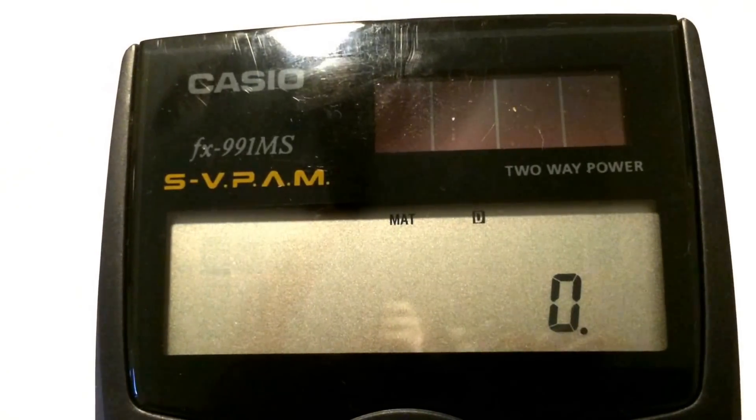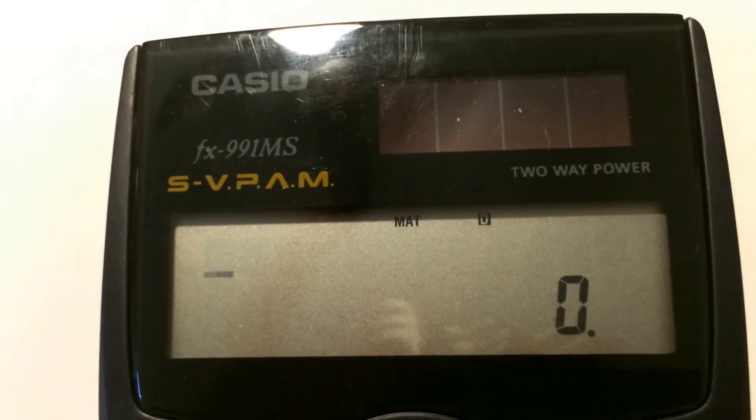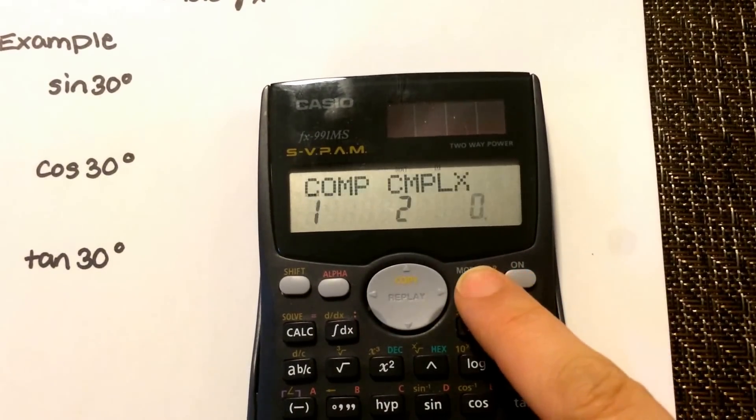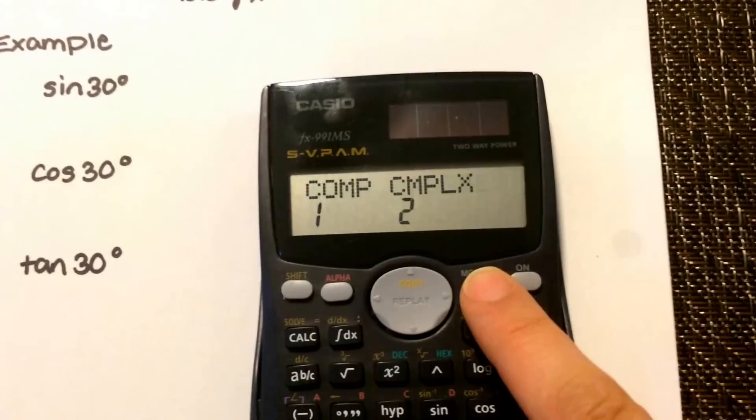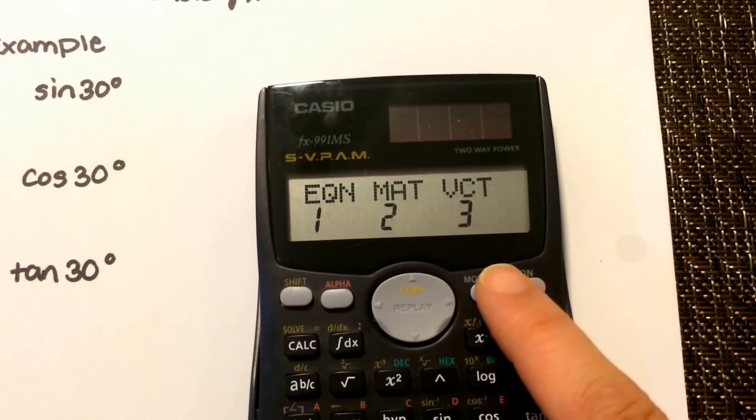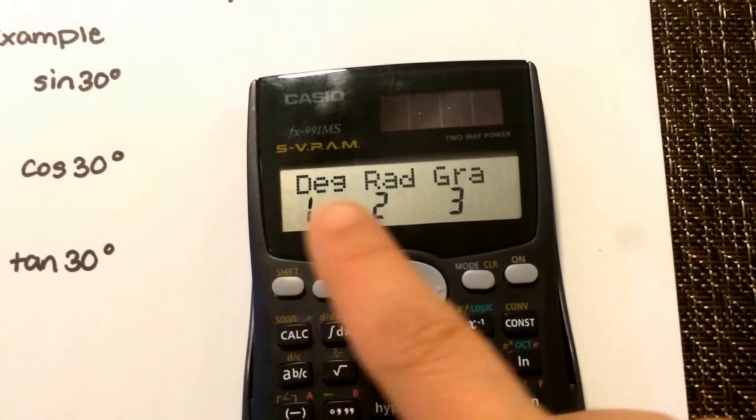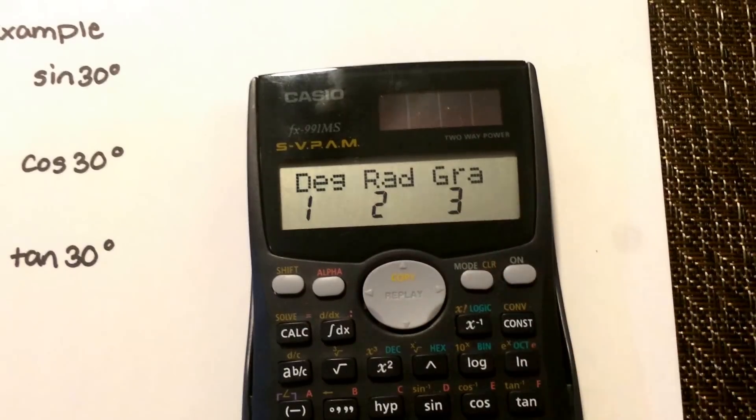If you're not, see that D right there in the box? Then you have to make sure you switch it to that. To do that, go to mode and select it again and again until you see degree, rad, and grad.